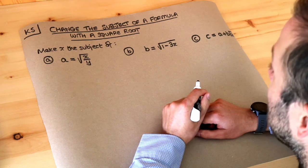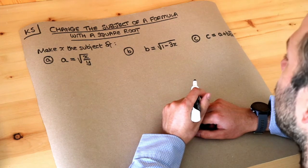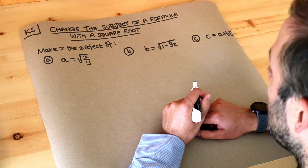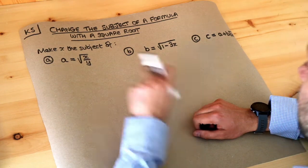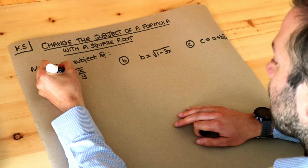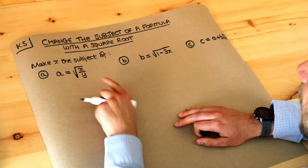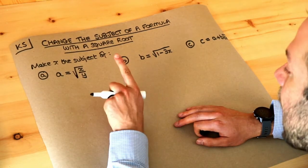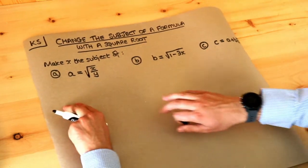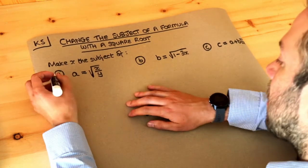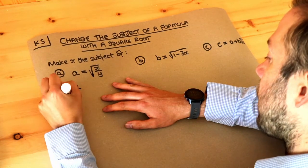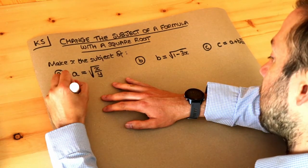Hello and welcome to this Dr Ross Mass key skill video on changing the subject of a formula with a square root. We've got three different equations here each involving a square root and we want to make x the subject — that means to get x on its own on one side of the equation. My advice for this is to undo the last thing done to the subject.